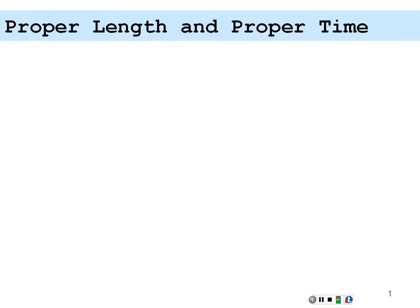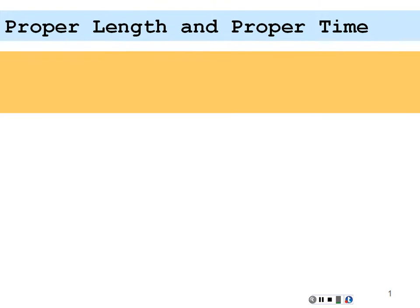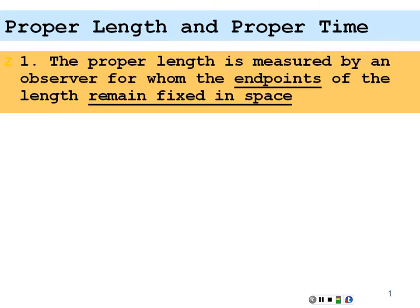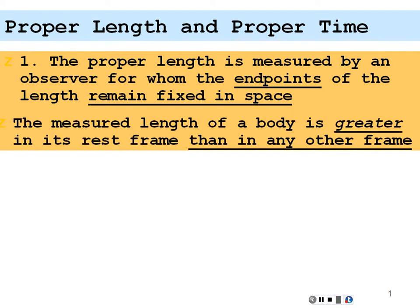We've had some exposure to special relativity. Let's take a look at a few more examples. Before we do, let's lay down our ground rules: proper length and proper time. The proper length is measured by an observer for whom the end points of the length remain fixed in space. So if the length is in your rest frame, you have the proper length, and anybody else moving with respect to you is going to observe that length to be contracted. The measured length of a body is greater in its rest frame than in any other frame.